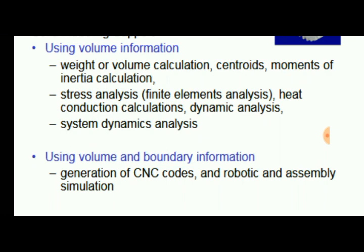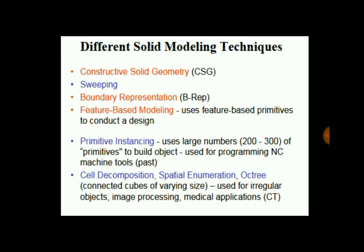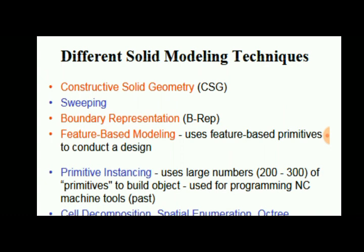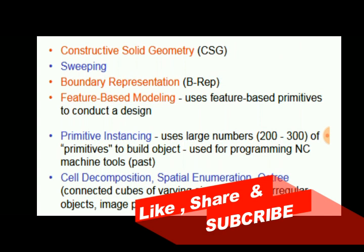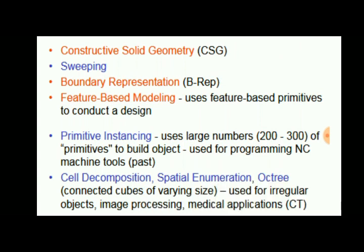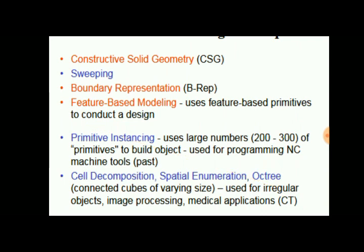The different types of solid modeling techniques include: constructive solid geometry, sweeping, boundary representation, feature-based modeling, primitive instancing — where multiple sheets arranged together form a complete solid object — cell decomposition, where a solid is broken into small volumes to get the required shape, and spatial enumeration tree.